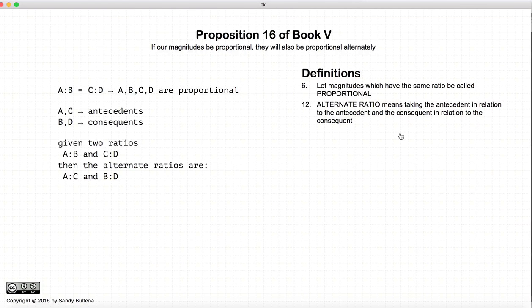Before we begin, we need to look at some definitions. If A to B and C to D are two ratios, and if they are equal, then the four magnitudes ABCD are said to be proportional. A and C are called the antecedents. B and D are called the consequence.